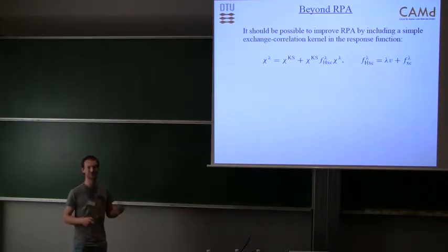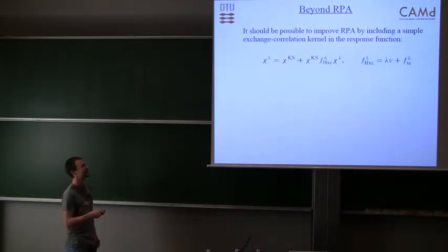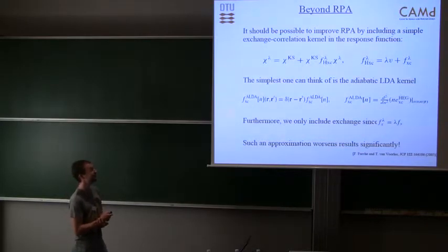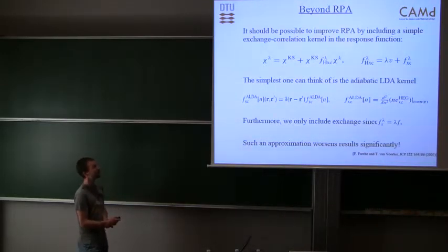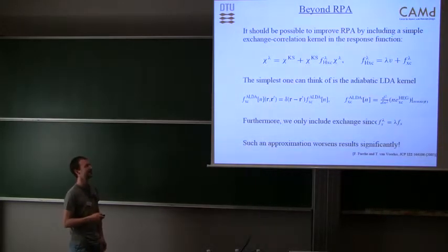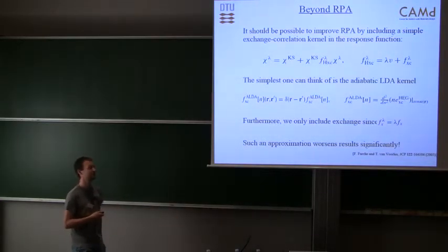We would like to improve this and do something better than RPA. When we consider RPA as a certain approximation within time-dependent density functional theory, it's very natural to try to include an exchange correlation kernel. RPA is obtained from this equation for the response function when we neglect the exchange correlation kernel. The simplest thing we can do is use adiabatic LDA. This is the second functional derivative of the LDA exchange correlation energy, and this has been shown to work quite well for excited states of molecules. Now it turns out that this approximation actually makes results much worse than RPA. It's very difficult to converge calculations, and if we can converge them, the results are worse than RPA.